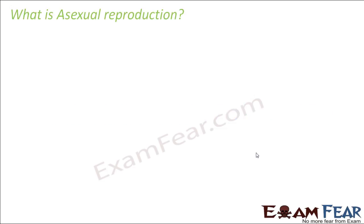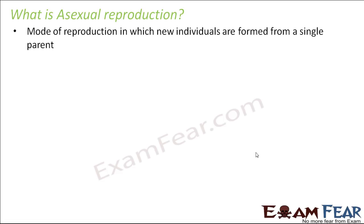Let us quickly have a recap of whatever we have learned about asexual reproduction. Asexual reproduction is that mode of reproduction in which new individuals are formed from a single parent, so we really do not need distinct sexes like male and female — just one organism can give rise to new organisms.